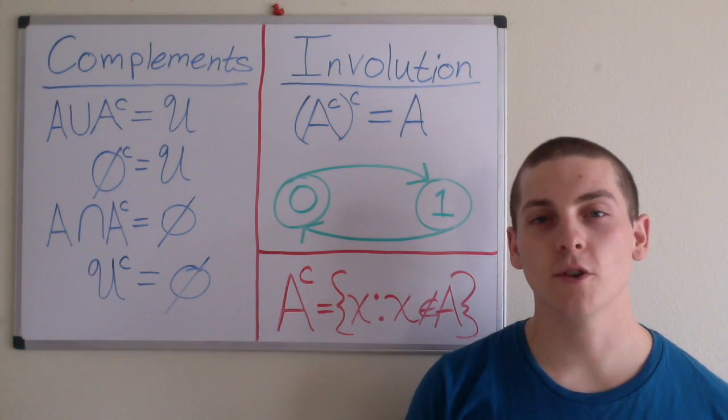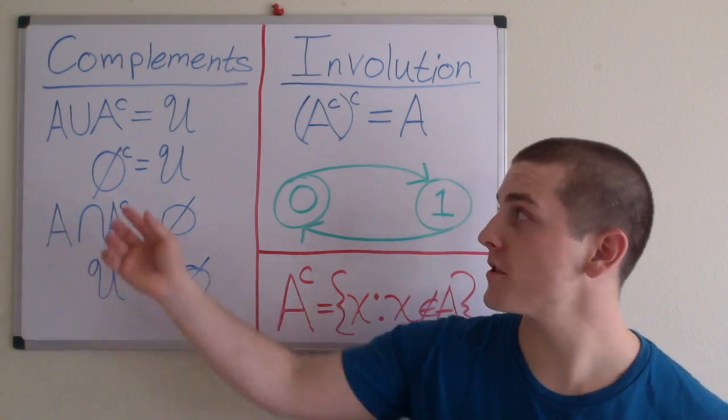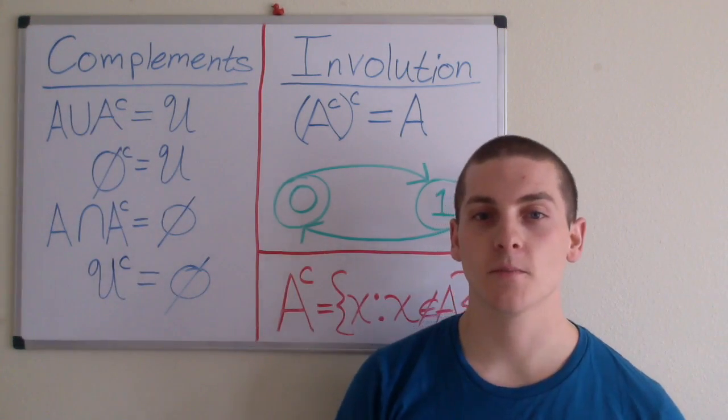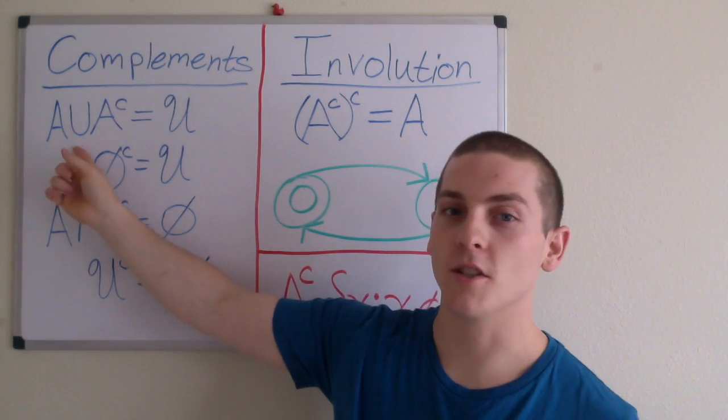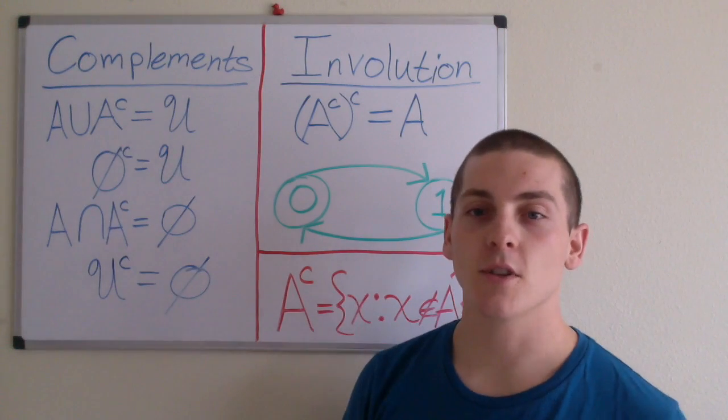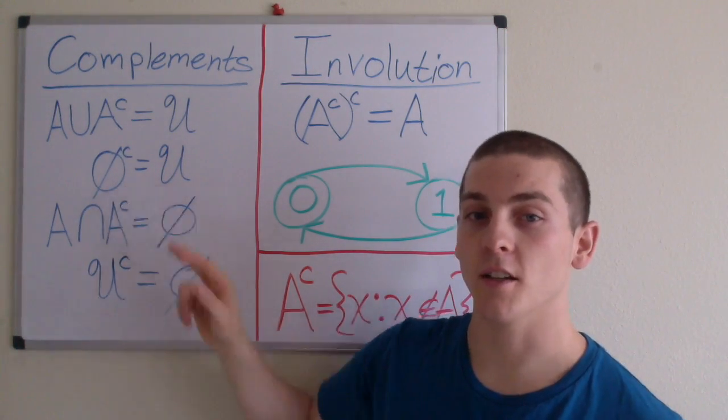I will now be going over two new algebraic laws for sets. The first are the law of complements. The law of complements states that if we take the union of a set and its complement, it equals the universe. Or if you take the complement of the null set, it equals the universe.